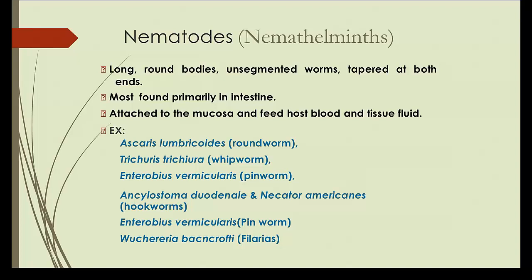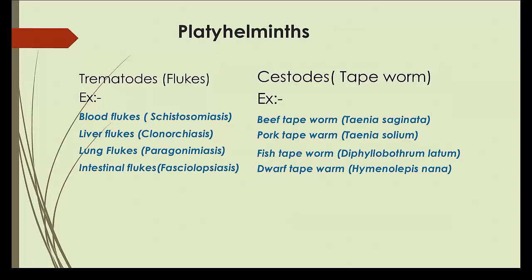A very quick introduction about nematodes: they have long round bodies and they are unsegmented. The list includes Ascaris lumbricoides (roundworm), Trichuris trichiura, Enterobius vermicularis, Ancylostoma duodenale, and Wuchereria bancrofti for filariasis. These are the important nematodes. The list of platyhelminthes includes trematodes like Schistosomiasis and Clonorchiasis, and cestodes.